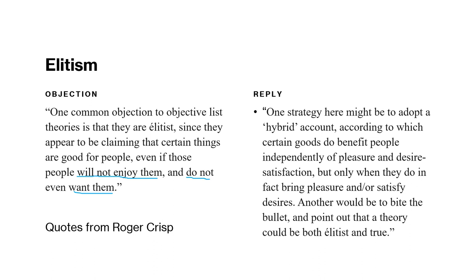Another approach is to simply bite the bullet and point out that a theory could be both elitist and true. It might be true that some things make your life go better even if you don't enjoy them and don't have a desire for them. Having more knowledge, achievement, and meaningful contribution to society — even if those aren't the things you wanted — makes your life better. That's what an objective list theorist could maintain.